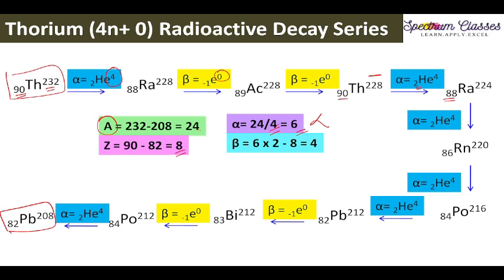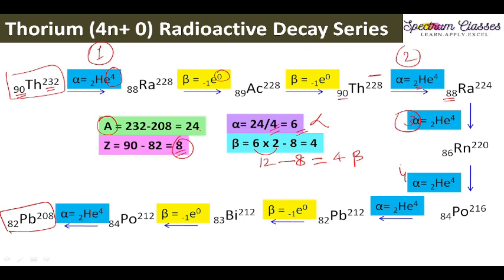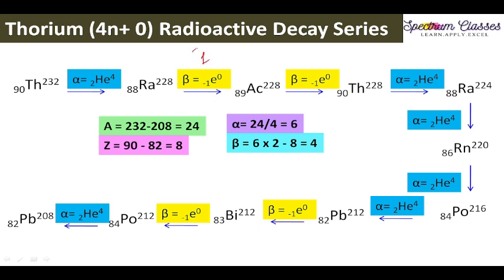Now for the atomic number Z: starting element thorium (90) minus end product lead (82) gives 8. Removing 6 alpha particles would decrease the atomic number by 6×2 = 12, but we only decreased by 8. This means beta particles are also being removed, since each beta emission increases atomic number by 1. So: 12 minus 8 equals 4 beta particles are removed. You can verify: 6 alpha particles (counted 1 through 6 in the diagram) and 4 beta particles (counted 1 through 4), giving 10 total steps in this series.